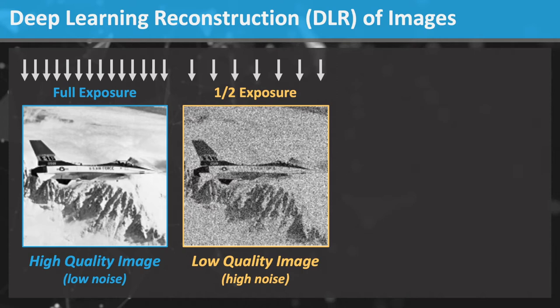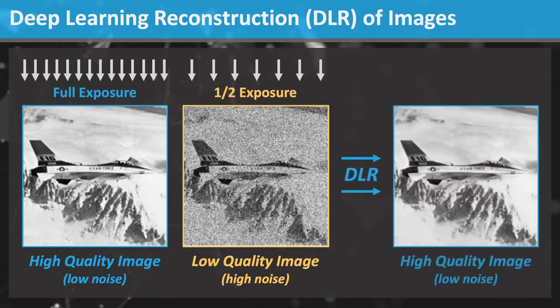It is much harder to see the jet with the high noise, which are the speckles on the image. Deep learning reconstruction is a new method to process these images and extract or remove the noise, resulting in a high quality image with low noise, even though it was started with only half the exposure. How could this be used to our advantage in CT imaging?